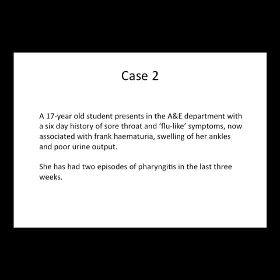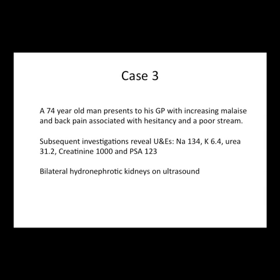The second case: a 17-year-old student who presents to A&E with a six-day history of sore throat and flu-like symptoms who now has frank hematuria — frank blood in the urine — swelling of her ankles, and poor urine output. She had two episodes of pharyngitis in the last three weeks.